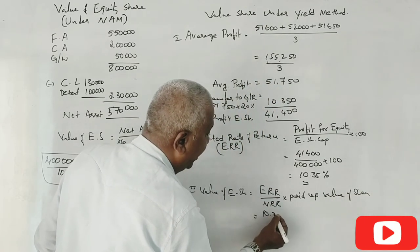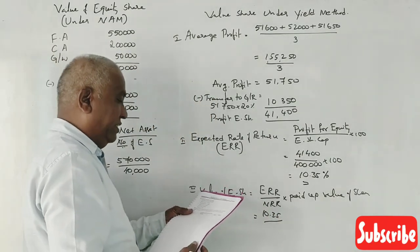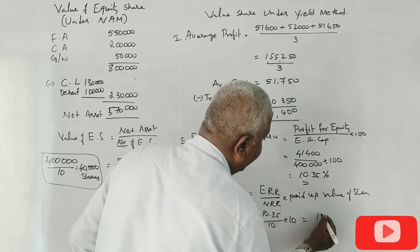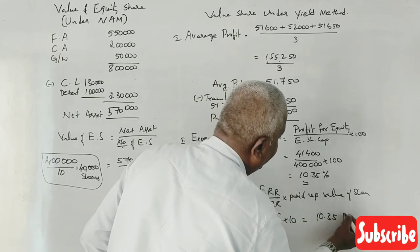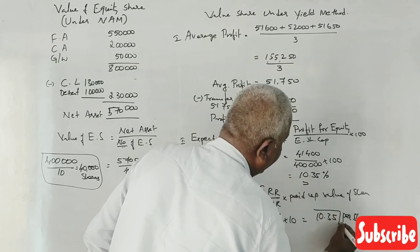So 10.35 divided by normal rate of return 10%, multiplied by one share price of 10 rupees. Equals 10 rupees 35 paise per share.